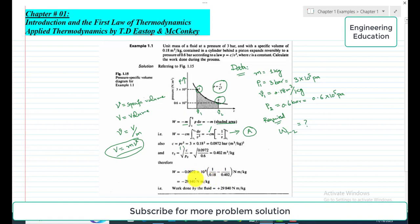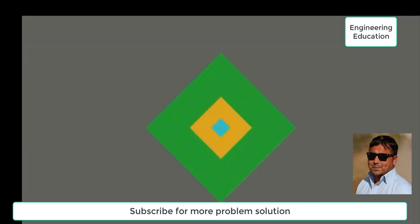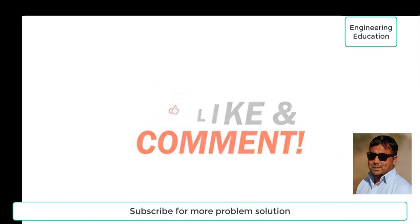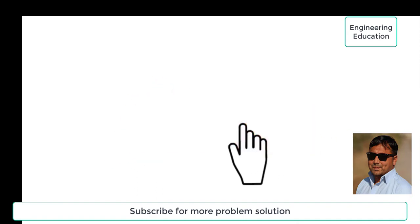So this is the work done by the fluid, which is 29,840 Newton meter per kilogram. So this is the overall discussion regarding Example 1.1, and in the next video we will be going to discuss Example 1.2. Thank you, thanks for watching. Please like and comment on my videos, also subscribe to my channel to get new videos.